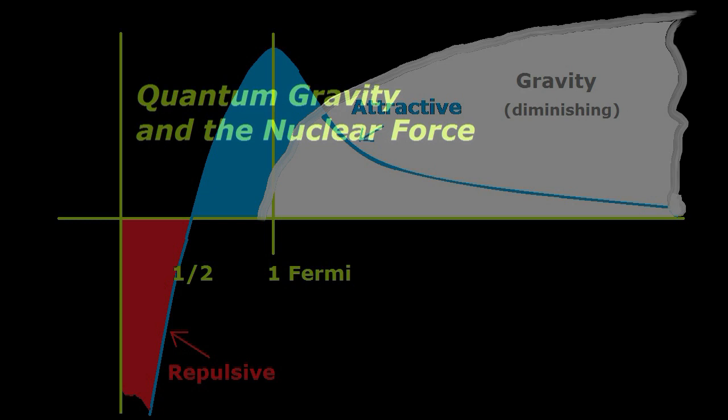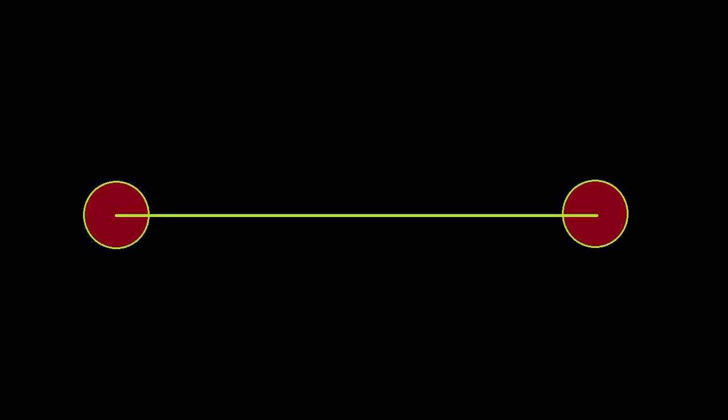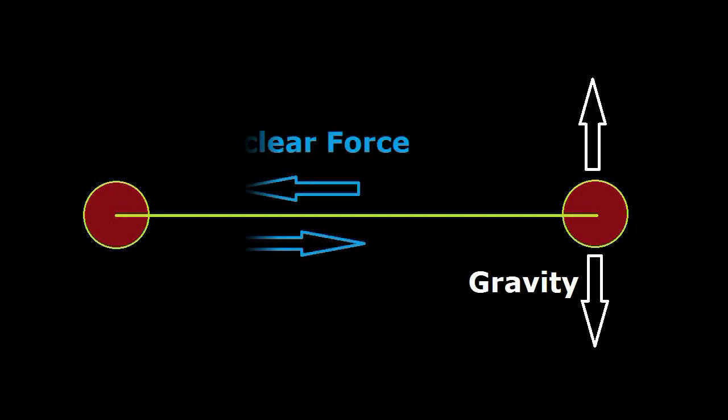If you are interested in the relationship of the gravitational force to the nuclear force, you may see my video, Quantum Gravity and the Nuclear Force. It concerns the hypothesis that the gravitational force is about vectors normal to a line connecting two bodies, and the nuclear force is about vectors parallel to that line.